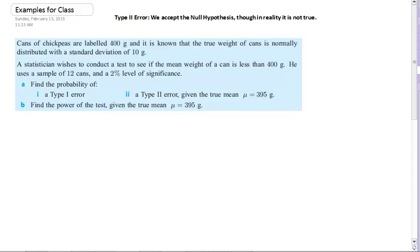So let's look at the situation here where we've got cans of chickpeas labeled 400 grams, and it's known that the true weight of cans is normally distributed with a standard deviation of 10 grams. So this is good, it tells us it's normally distributed, that'll be helpful, we'll be able to use that as we're working through.